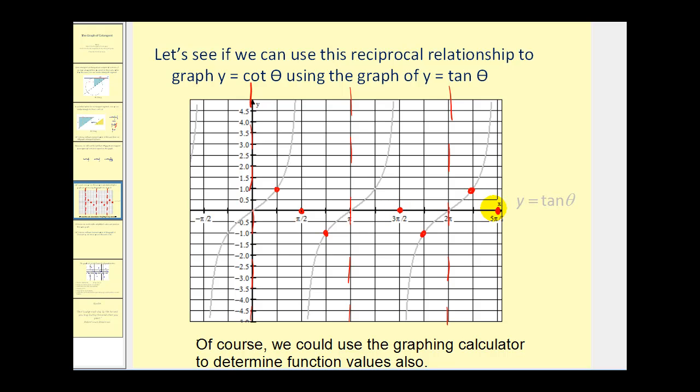Let's pick a few more key values. Where tangent is equal to point five or one-half, cotangent would be two, here, here, and here. We already have these vertical asymptotes, and we have these four points.